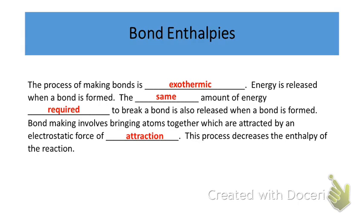The process of making a bond is exothermic — energy is released when a bond is formed. Bond breaking requires energy, but bond making releases energy. Based on the first law of thermodynamics, the same amount of energy required to break a bond is also released when a bond is formed.